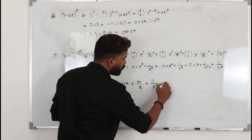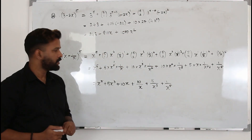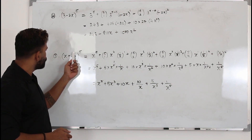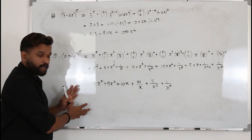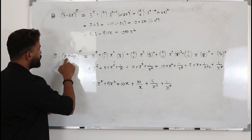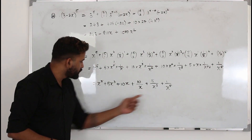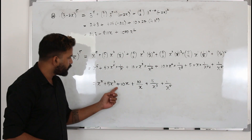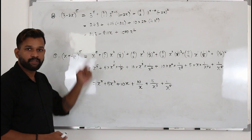If part b asks for (x − 1/x)⁵, you don't need to redo the whole expansion. Take the same expansion from part a and apply alternating signs starting from positive: x⁵ − 5x³ + 10x − 10/x + 5/x³ − 1/x⁵. That's the expansion of (x − 1/x)⁵.